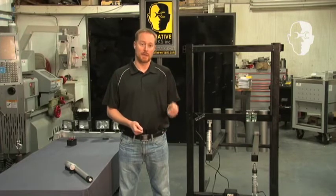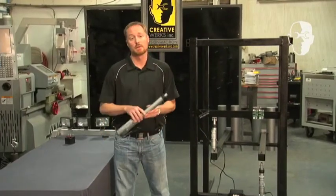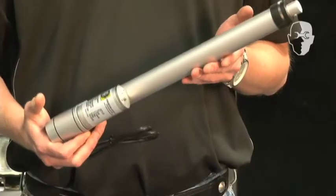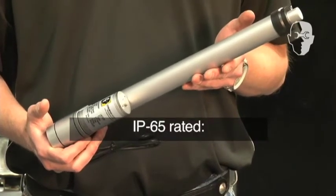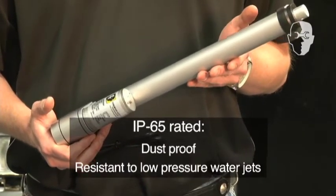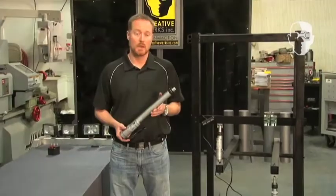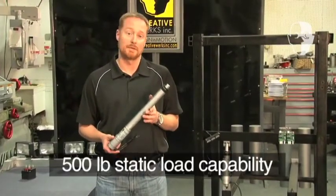We offer linear actuators with a stroke length from 2 inches to 12 inches or more. All of our linear actuators are rated at IP65, meaning that they are completely protected against dust as well as low pressure water jets. Our LD series actuators will support a static load of up to 500 pounds.